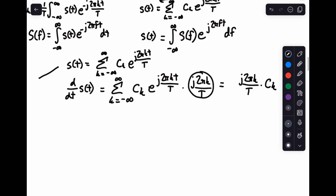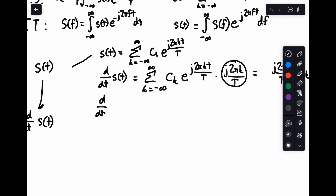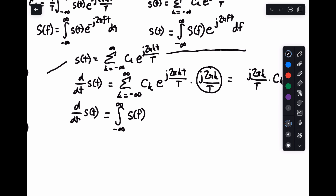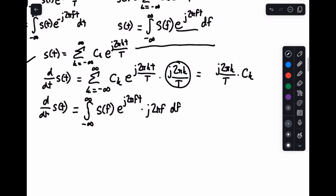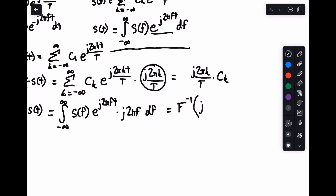And likewise, if we look at the Fourier transform: d/dt of s of t, just looking at the inverse transform expression, this equals the integral from minus infinity to infinity of S of f — which just depends on f, not on t — times d/dt of the exponential, e to the j two pi f t, times the derivative of the inside, which is j two pi f, using the chain rule, df. So this is basically equal to the inverse Fourier transform of j two pi f times S of f.